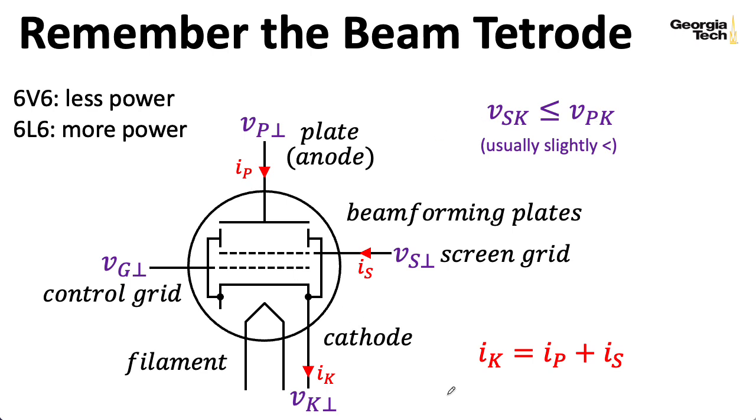The screen grid is generally held at a lesser or equal voltage than the plate. And something that makes our analysis more complicated is that we can't assume that the plate current and the cathode current are the same anymore, because under normal operation, although there's no current flowing through the grid, there is going to be a small current flowing through the screen. So the total cathode current is that plate current plus the screen current.